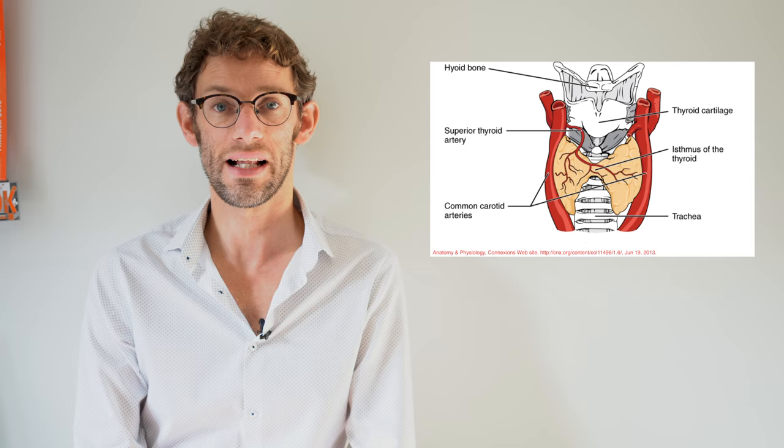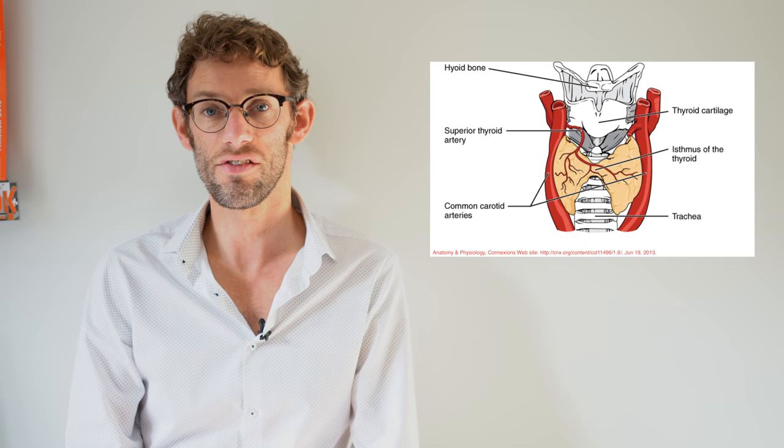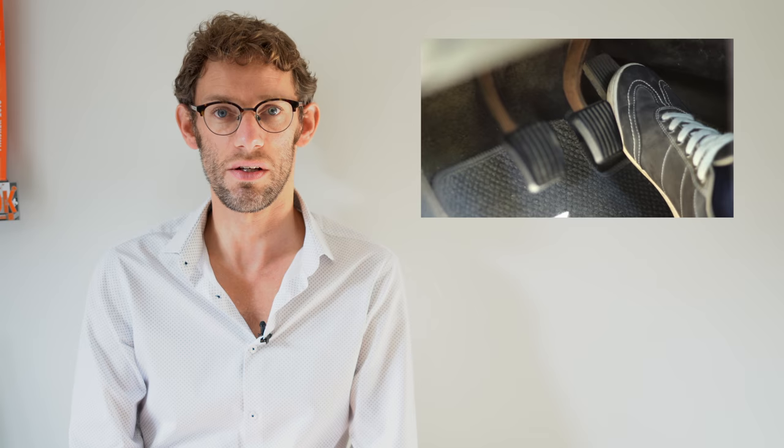So what is the thyroid gland? The thyroid gland is an endocrine or hormone gland found at the very bottom of the neck, just beneath your thyroid cartilage. It acts as the accelerator for the body. If we use a car analogy, if you've got a hypo or low-functioning thyroid, it's like you can't press down very hard on the accelerator.